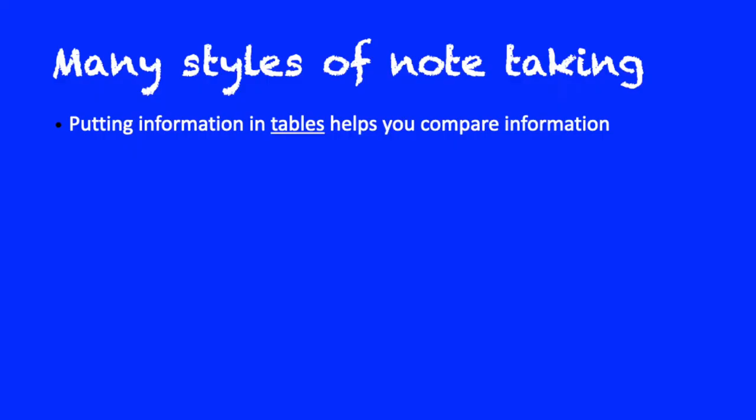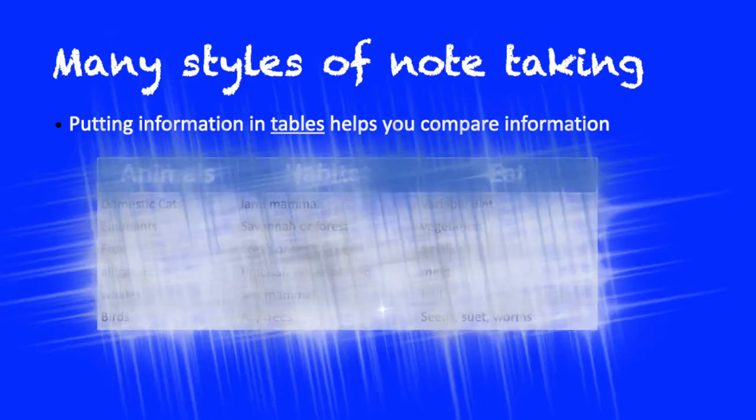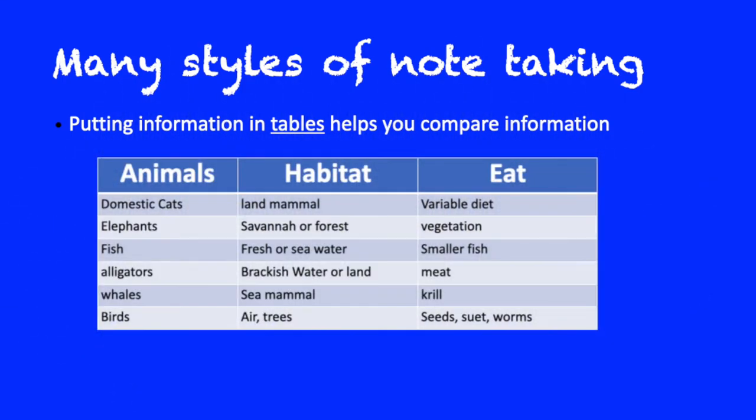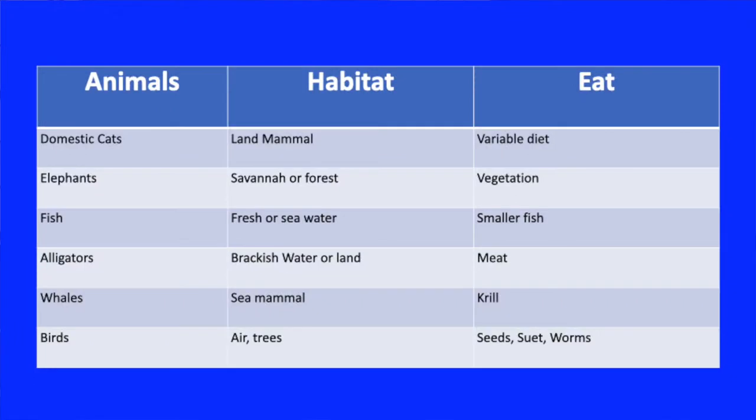There's many styles of taking notes. The styles include columns. You can multiply the columns and make them into tables so that you can have animals and then have lists of things that compare the animals as you go across the table. Like domestic cats, their habitat is land, what do they eat, a varied diet. So you can put tables in there, and tables are really good for comparing one thing to another.